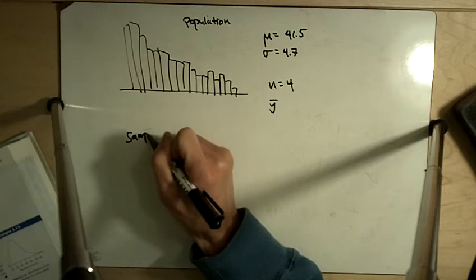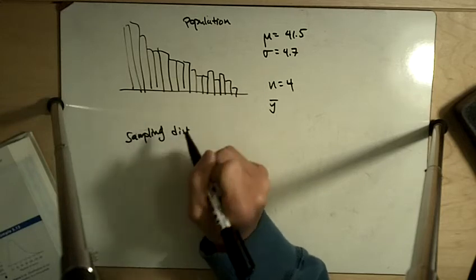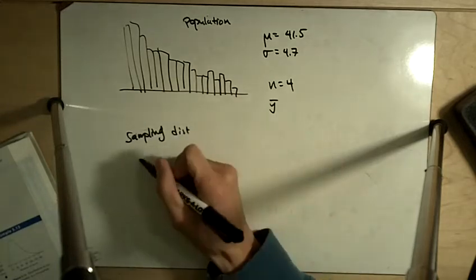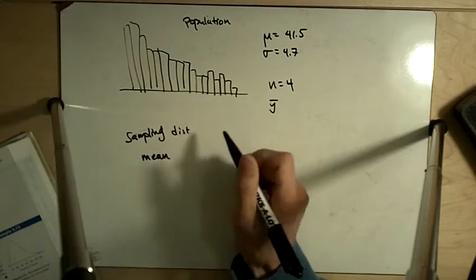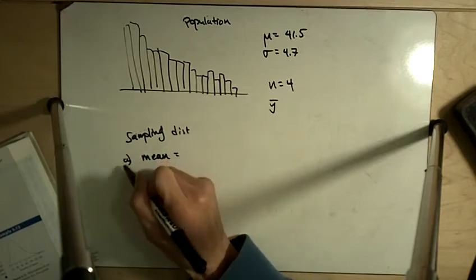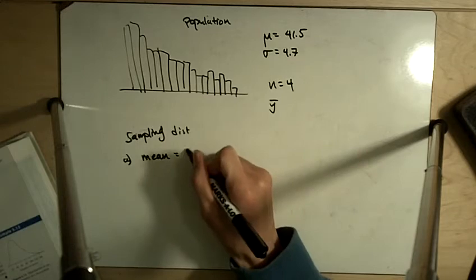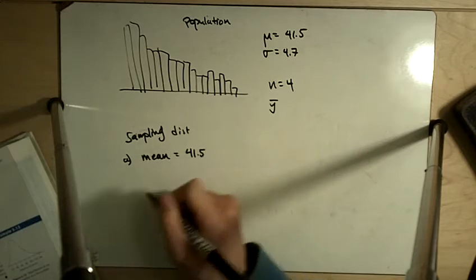So it says for the sampling distribution, what is the mean? The mean of the sampling distribution is going to be same as the population distribution. So that's going to be 41.5.